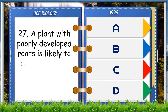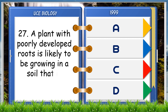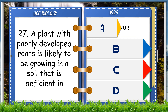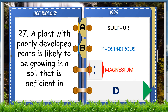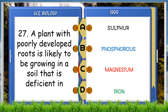A plant with poorly developed roots is likely to be growing in a soil that is deficient in: A. Sulphur, B. Phosphorus, C. Magnesium, D. Iron. The answer is B, phosphorus.